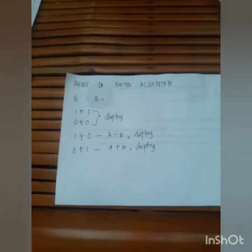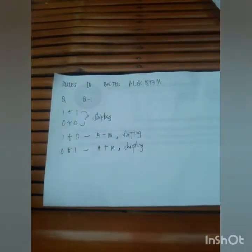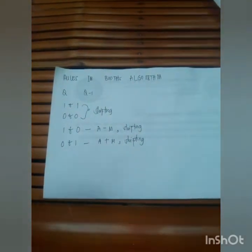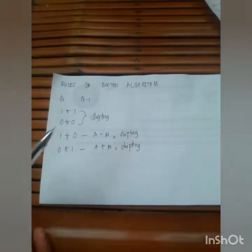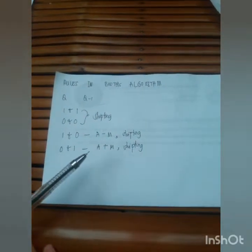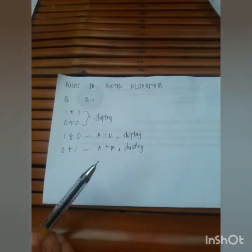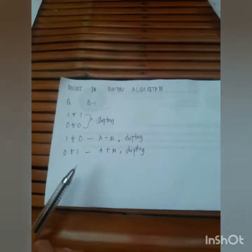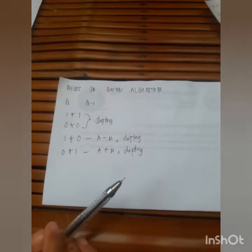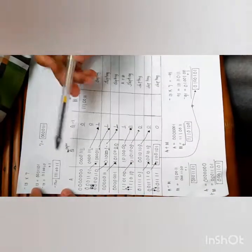Let's go to the rules in Booth's algorithm. If the value is 0 and 0, or 1 and 1, we have to perform the right shifting operation. If it is 1 and 0, we have to subtract the accumulator and the multiplicand and then perform the shifting operation. And if 0 and 1, we have to add the accumulator and the multiplicand values and then perform the shifting operation.